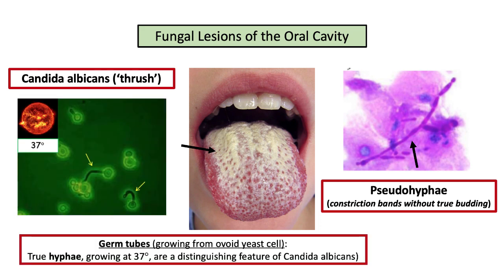Besides the pseudohyphae already mentioned, be prepared to identify Candida by the presence of true hyphae, referred to as germ tubes, from germination. The laboratory description of germ tubes growing at 37 degrees Celsius is a unique and identifying feature of Candida.